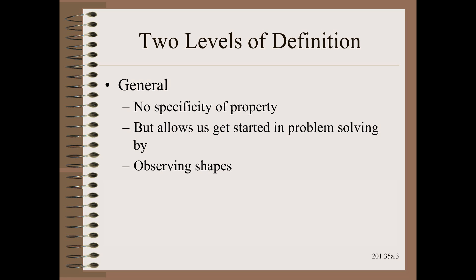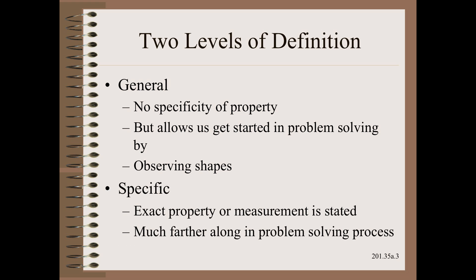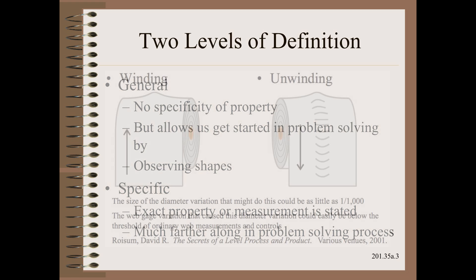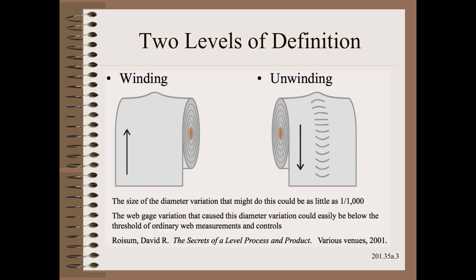Ultimately, however, our goal is to nail the property of interest with great specificity. One well-known example is that gauge variation on the web stacks up on the roll so that the high spots may be stretched into bagginess.